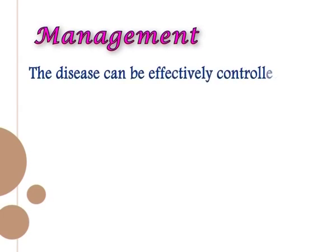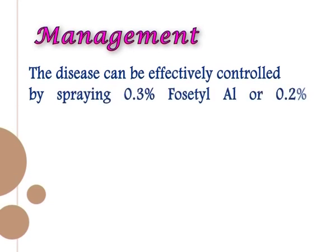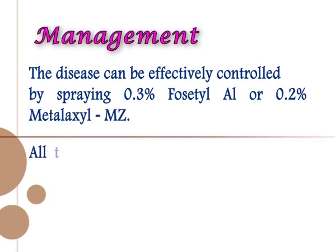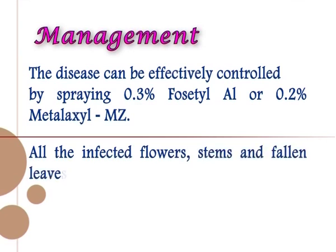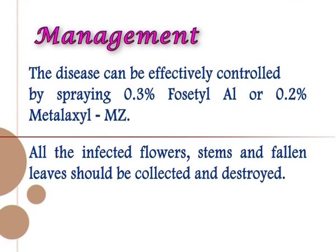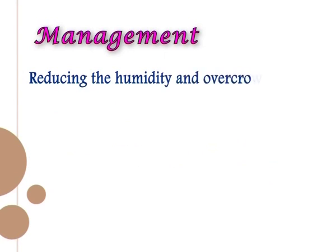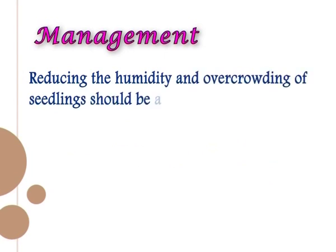Management of downy mildew: the disease can be effectively controlled by spraying 0.3% fosetyl aluminium or 0.2% metalaxyl MZ. All infected flowers, stems, and fallen leaves should be collected and destroyed. Reducing humidity and overcrowding of seedlings should be avoided.